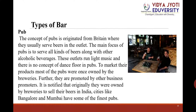Pub: The concept of pubs originated from Britain, where they usually serve beers in the outlet. The main focus of pubs is to serve all kinds of beer along with other alcoholic beverages. These outlets run light music and there is no concept of dance floors in pubs. Most pubs were originally owned by breweries to sell their beers, and later promoted by other business promoters. In India, cities like Bangalore and Mumbai have some of the finest pubs.